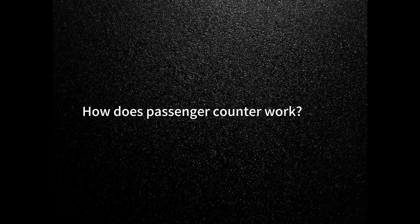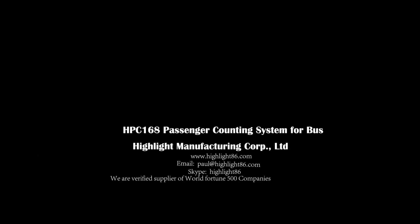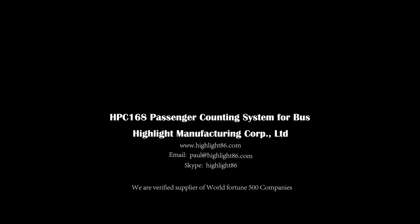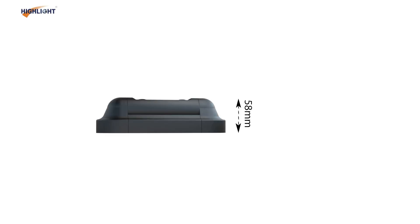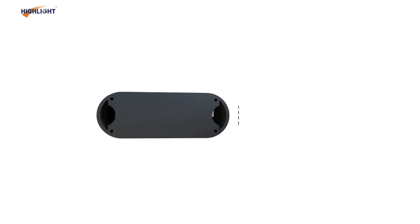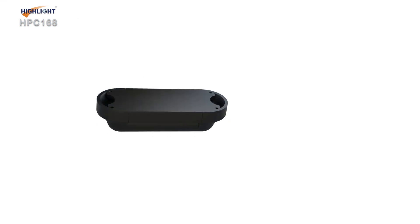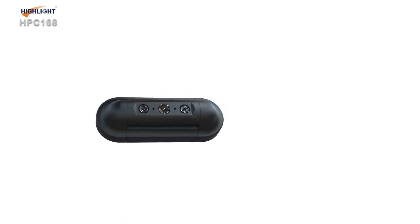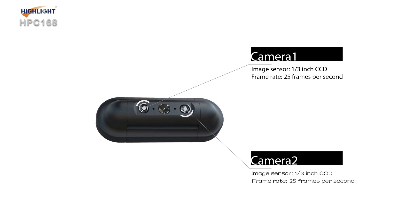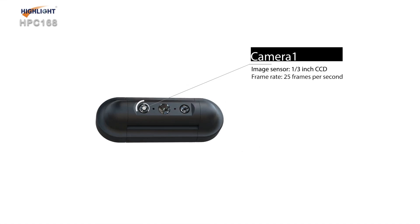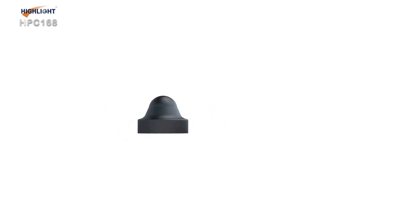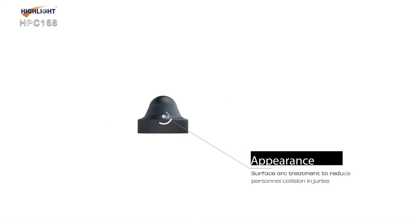How does the bus passenger counter work? The working principle of the bus passenger counter is mainly based on 3D image sensor technology and stereo vision technology. By installing binocular cameras on car doors, roofs, and other areas, real-time motion trajectories of all human targets within the video range are captured and analyzed.